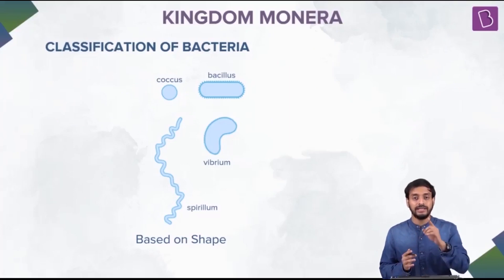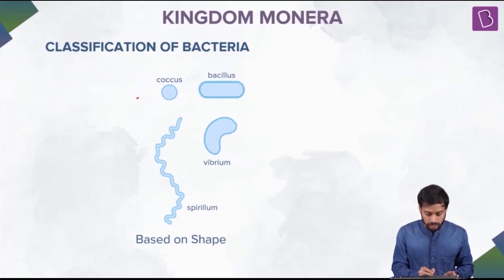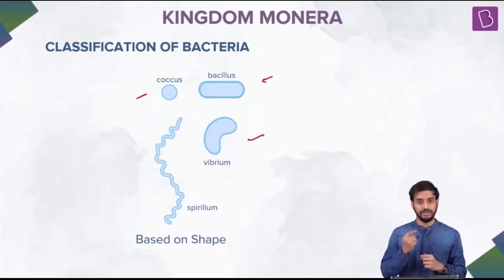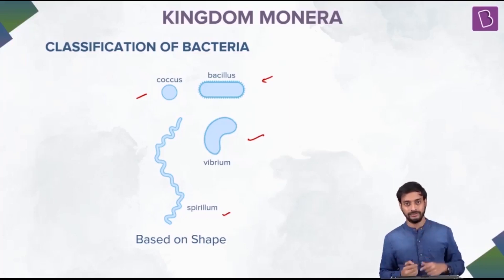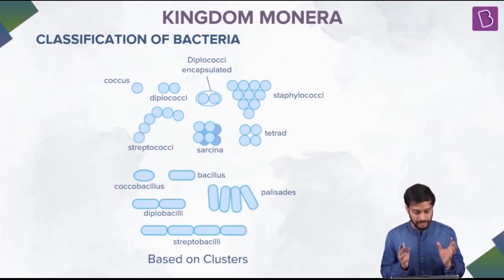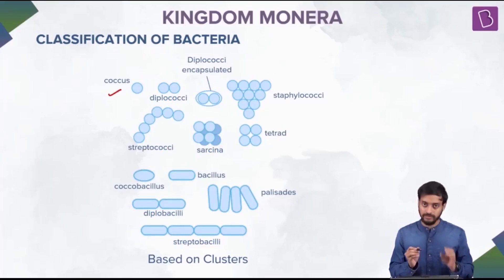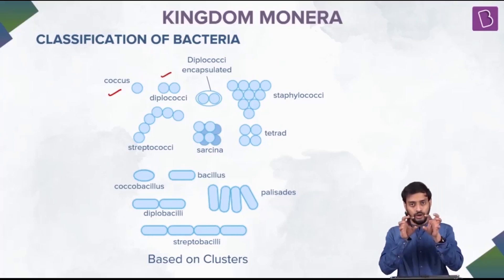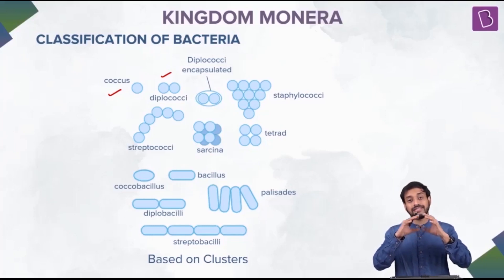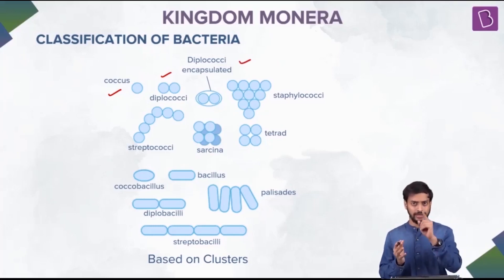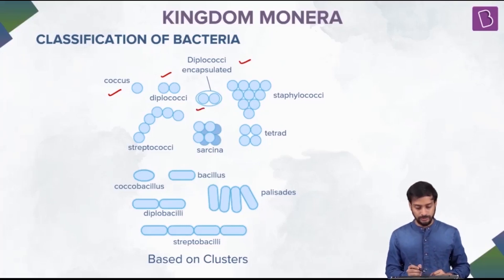Based on shape, bacteria can be divided into various forms: coccus is spherical/round, bacillus is rod-shaped, vibrium is comma-shaped, and spiralum is spiral or coiled. There is another classification based on clustering - single cells can cluster and form different shapes. For example, diplococci means two cocci together, and when diplococci form a capsule, it is known as encapsulated diplococci - a very protective covering around the structure.